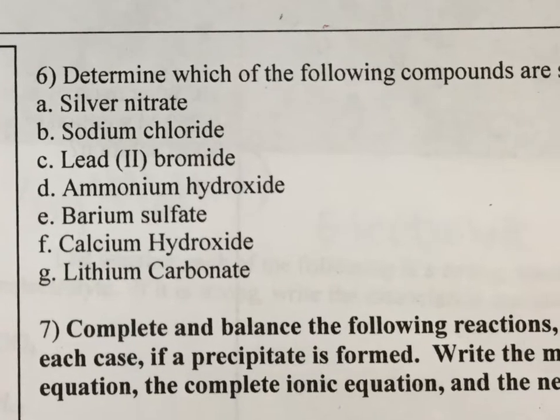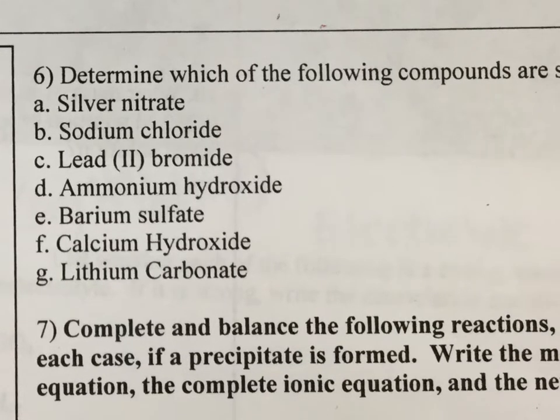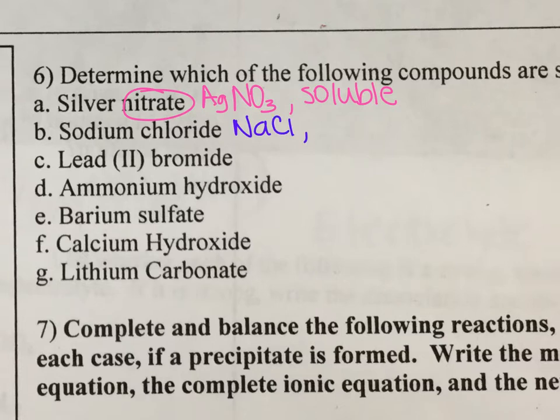Let's go to number six over on the right-hand side. We're going to look at which ones are soluble, which ones are insoluble. Determine which ones are soluble and insoluble. So silver nitrate, AgNO3. Soluble. Why? The nitrate did it. Sodium chloride, NaCl. This one is going to be soluble because it's group 1 and group 17.